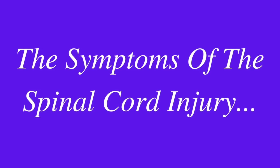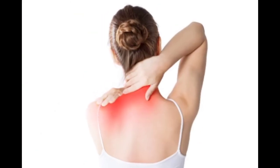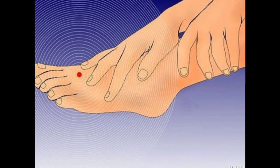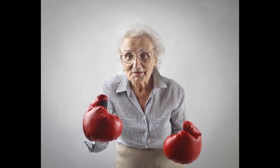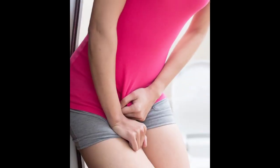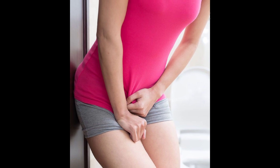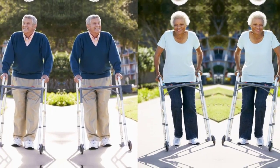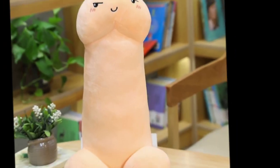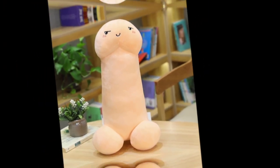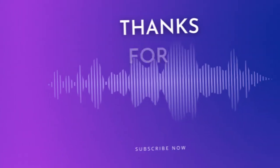Symptoms of spinal cord injury include: pain, numbness, tingling or loss of sensation in related areas, paresthesia, weakness or inability to move body parts, burning sensation, loss of movement, loss of bladder and bowel control, difficulty in walking, difficulty in breathing, changes in sexual function, and spasticity. Thanks for watching.